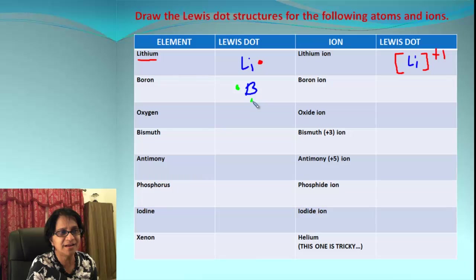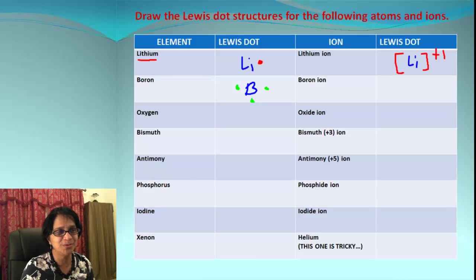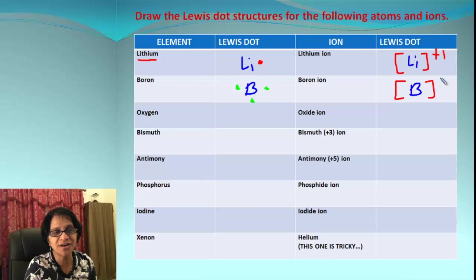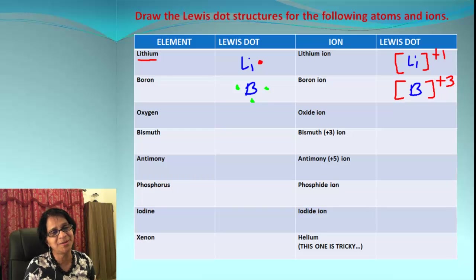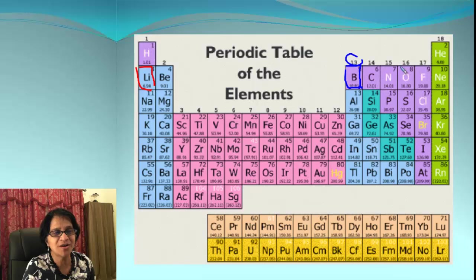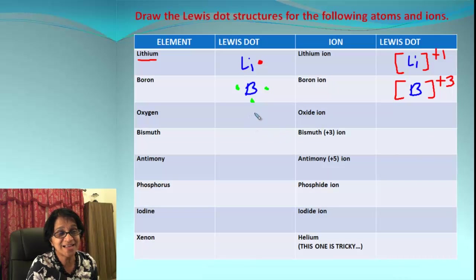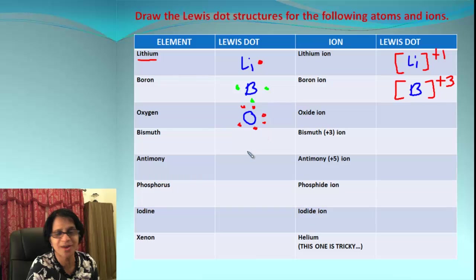We write the symbol B with three electrons around it. When the boron ion is formed, elements from group 13 tend to lose those three electrons. If boron loses all three electrons, there will be no electrons remaining around it. We get a positive three ion since three electrons are lost. Next is oxygen, which is in group number 16, so it has six valence electrons.